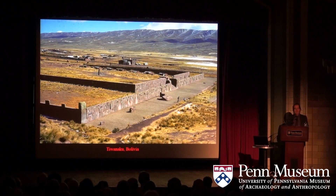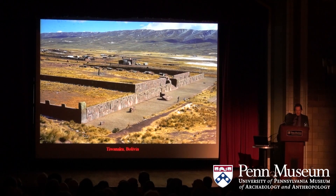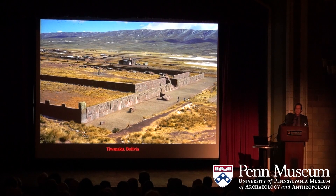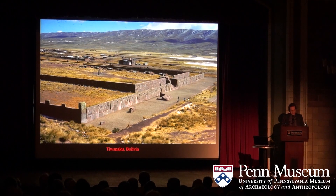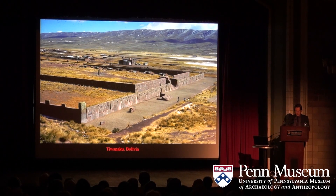In Andean archaeology — the other hat that I wear — monumentality is considered a physical correlate of the appearance of complex society. For the southern Andes, elite public architecture first appears in the early horizon and early intermediate period as stone-faced platforms with sunken temple courts. Through the lens of cultural evolution, the increasing scale and amount of labor invested in monumental buildings is correlated with increasing social complexity.